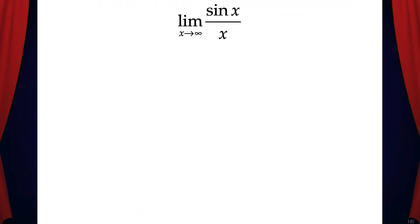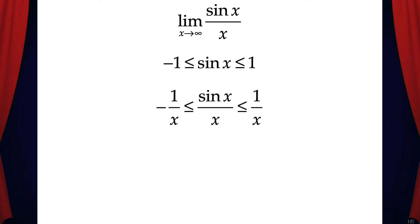Let's do another example. Find the limit of sin(x)/x as x approaches infinity. The first thing to notice is that sin(x) is always greater than or equal to -1 and less than or equal to 1. Now let's multiply every term in this inequality by 1/x. That gives us -1/x ≤ sin(x)/x ≤ 1/x.